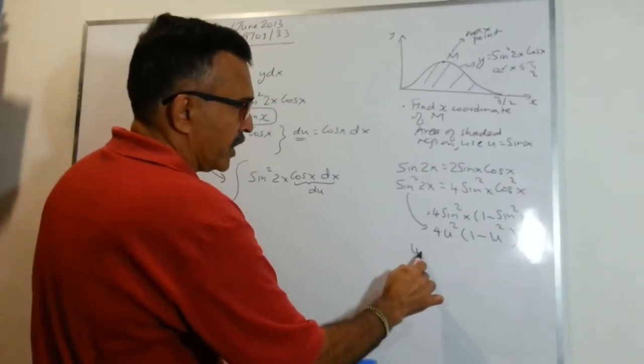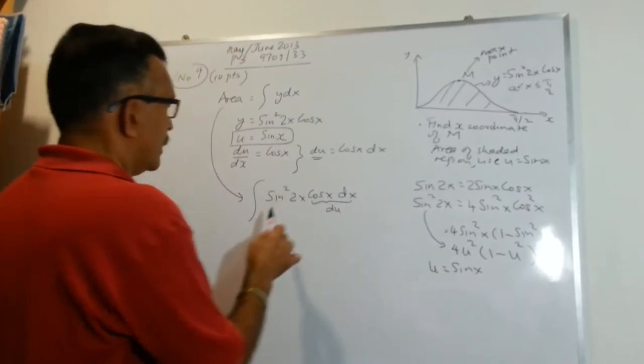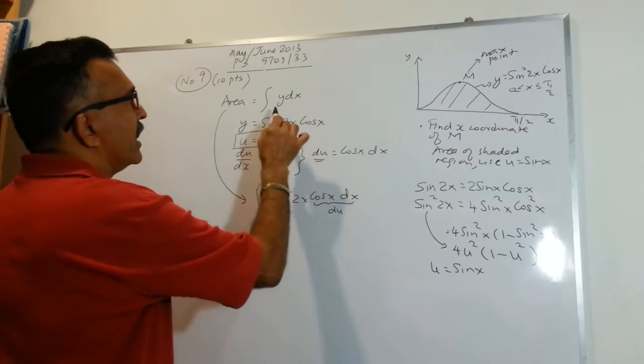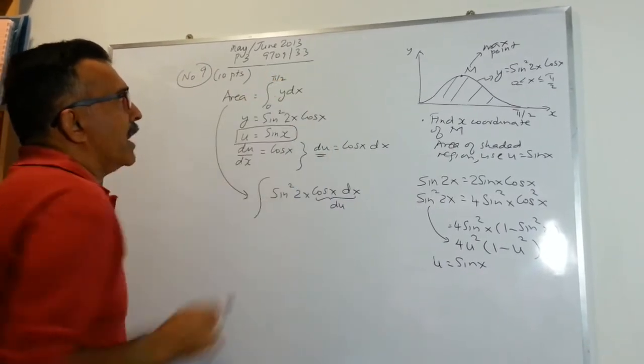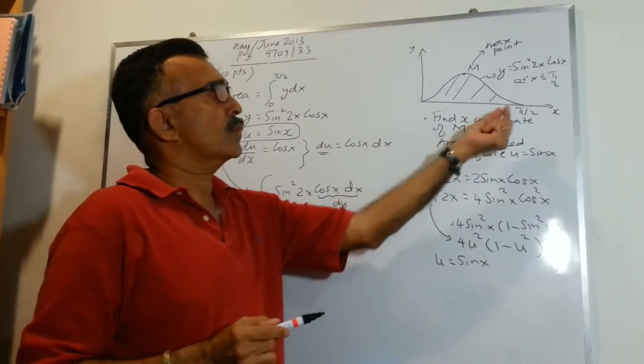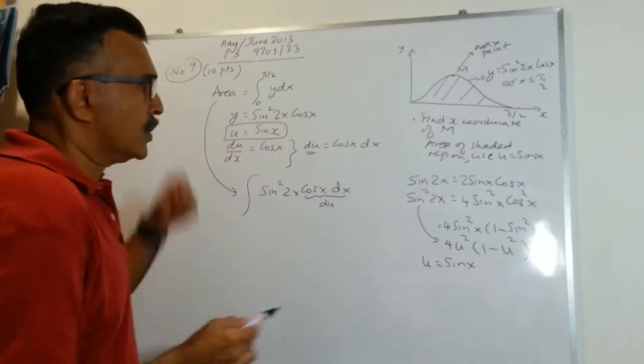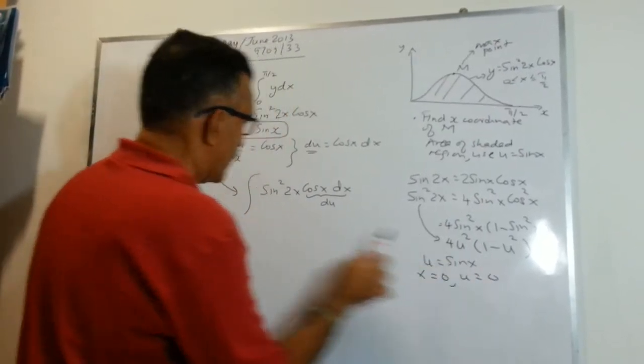We have u equals sin x. So our lower limit will be 0 and the upper limit will be π/2. When x is 0, u is 0. So let's write it down.